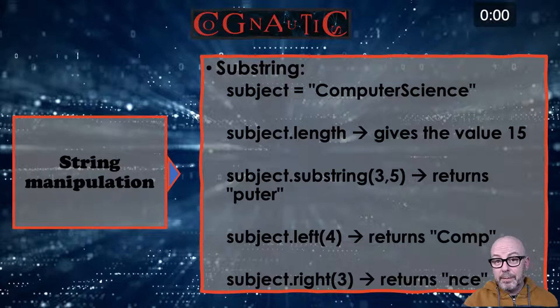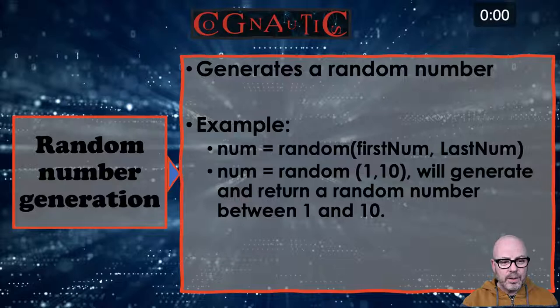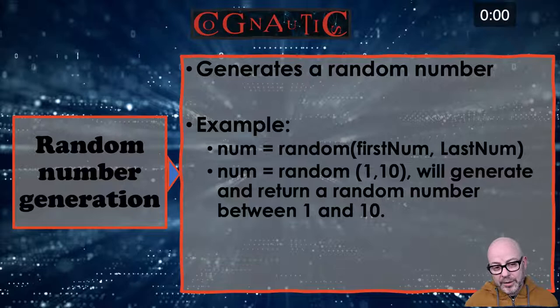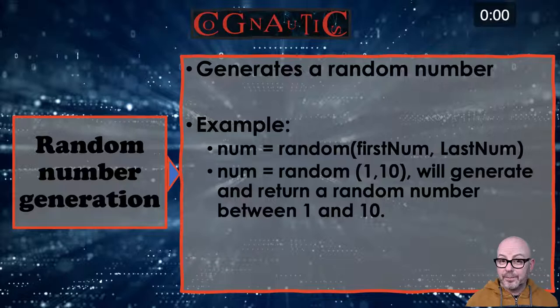Typically in the exam they might ask you to write a program that opens a text file, pulls out a certain number of letters, saves it, and closes it. Now, random number generation: num = random(first_number, last_number). For example, num = random(1, 10) will generate and return a random number between one and ten. It's literally like learning a new language.